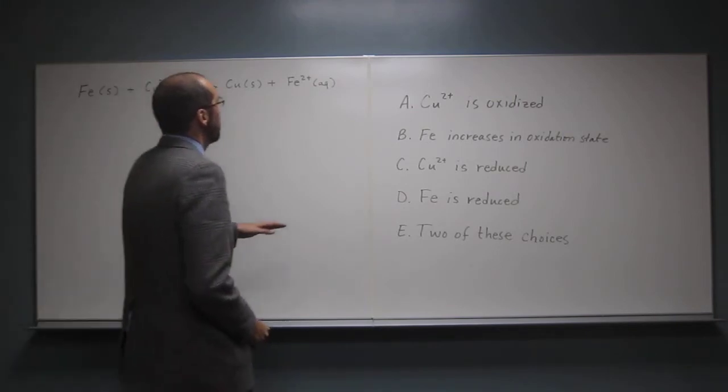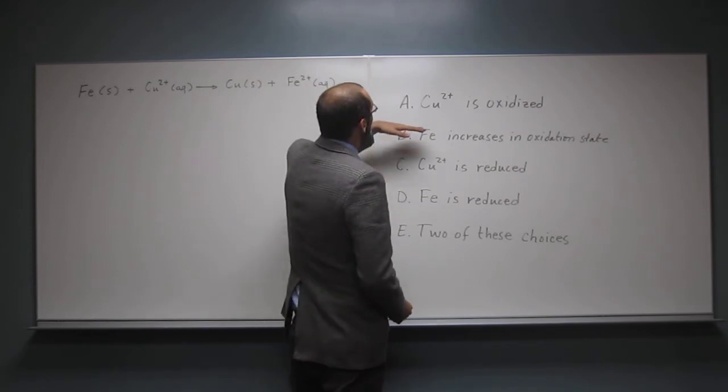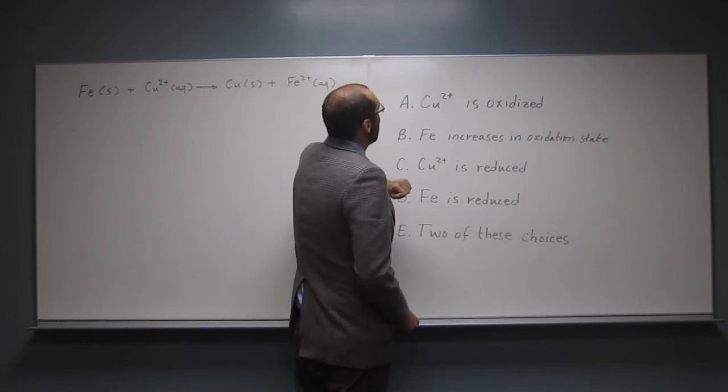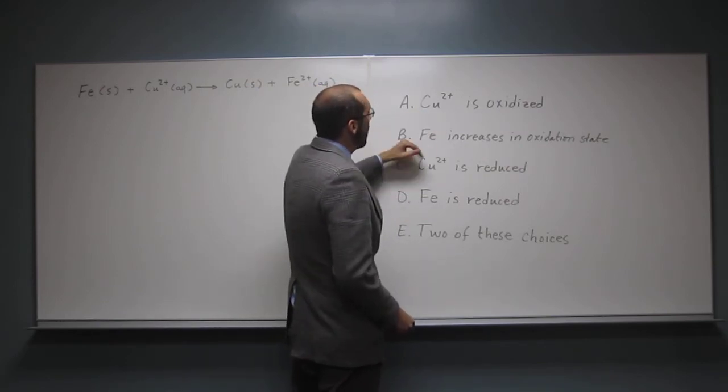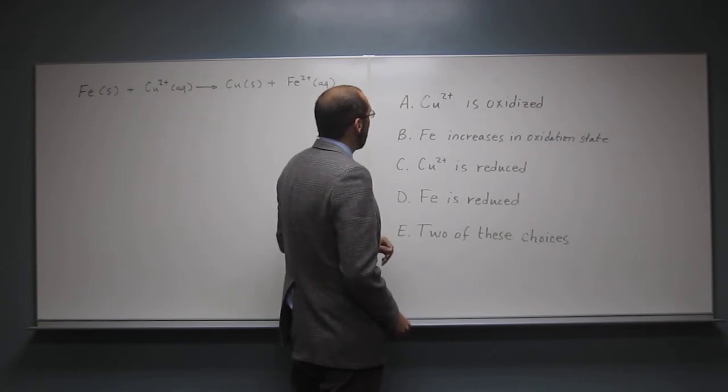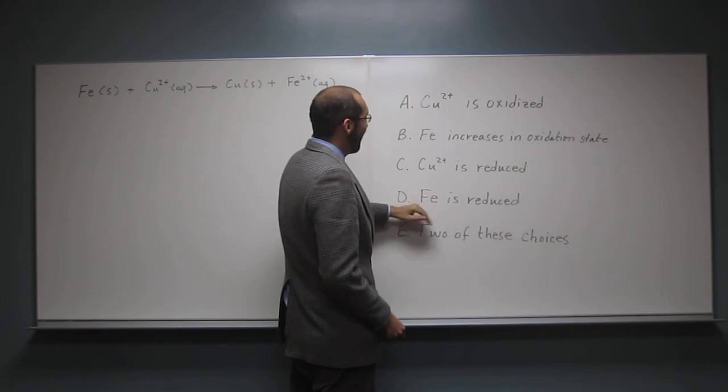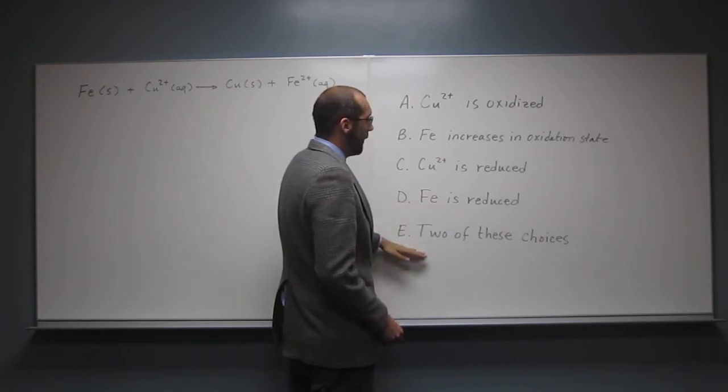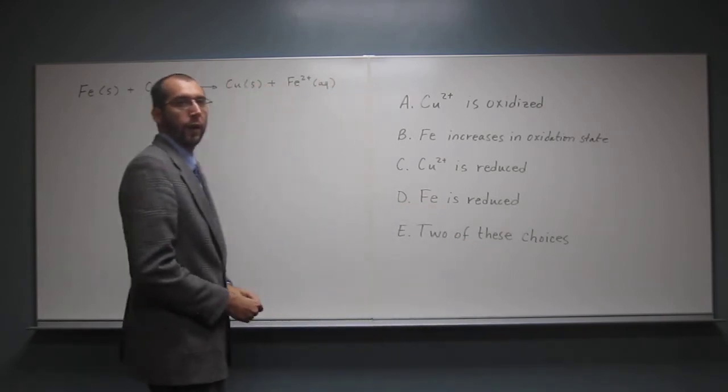And then it gives you these statements and it wants you to identify which one. So A, Cu²⁺ is oxidized. B, Fe increases in oxidation state. C, Cu²⁺ is reduced. D, Fe is reduced. And E, two of these choices are correct.